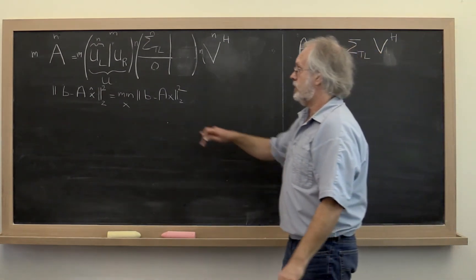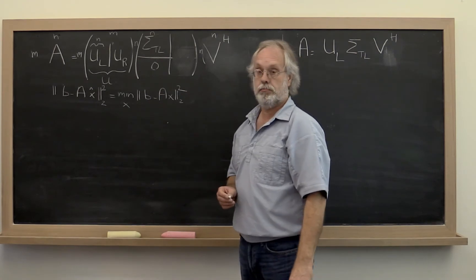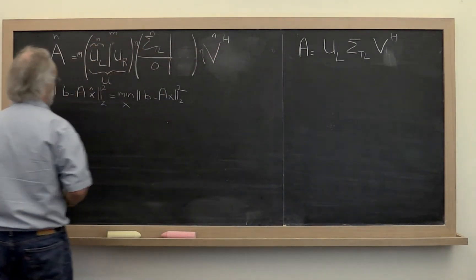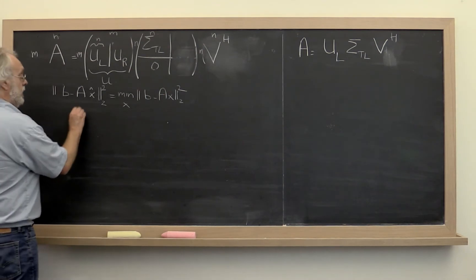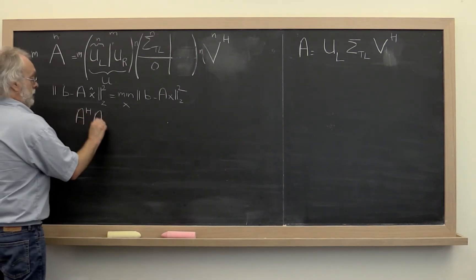Now once you have that, you can turn to the linear least squares problem. And you can remember that if A has linearly independent columns, then we can instead solve the normal equations.